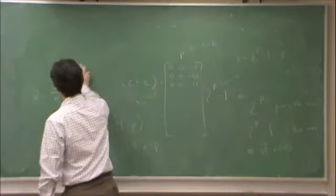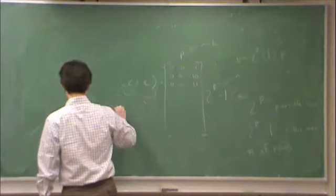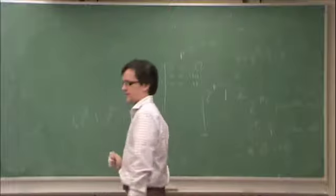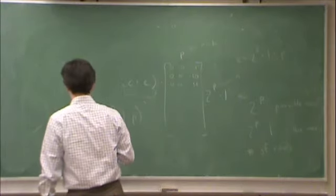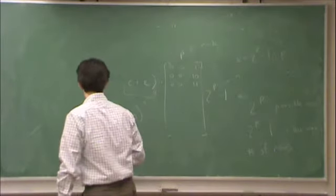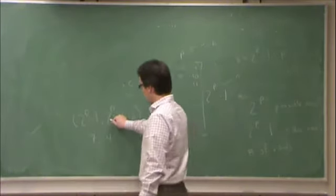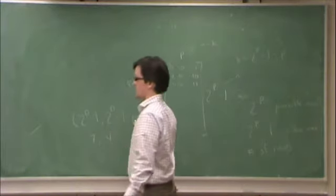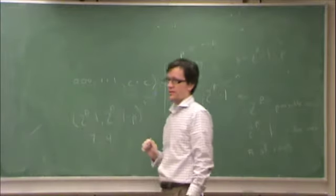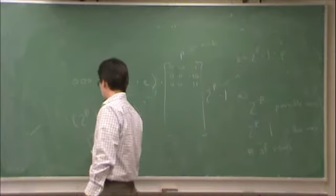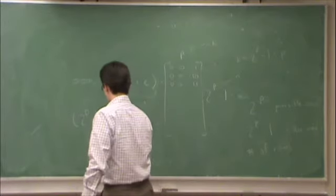For each integer p there exists a single error correcting code with these dimensions. This starts to get interesting when p is equal to 3, in which case we have a 7, 4 code. If p is equal to 2, what do we have? We have 4 minus 1 is 3. And 4 minus 1 minus 2 which is 1. So we basically have a 3, 1 code. Which is not very interesting. Basically that code is 2 code words and those are 0, 0, 0 and 1. So that's not super interesting. The first interesting code here is 7, 4. The next interesting code is 2 to the 4th is 15. 15 minus 4 is 11. And so on.